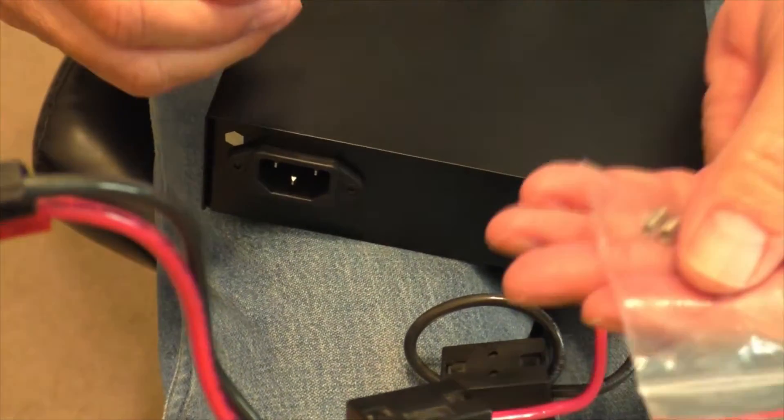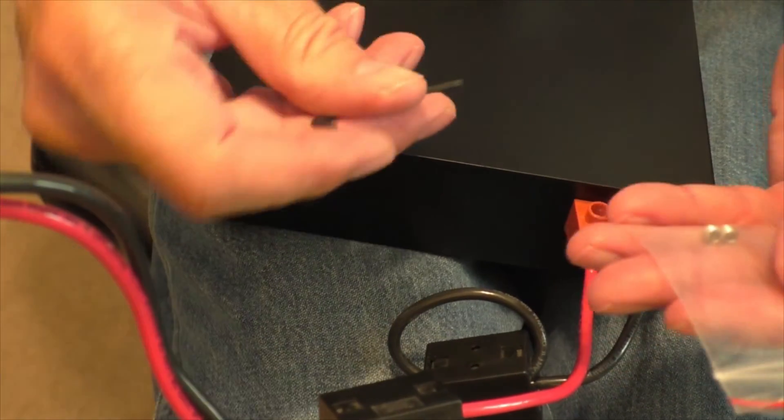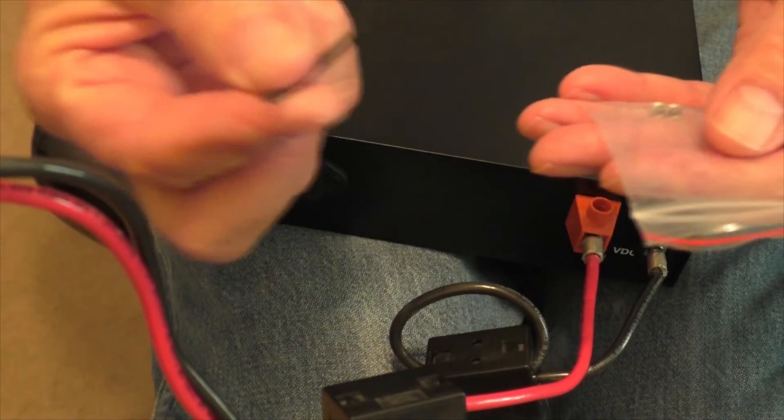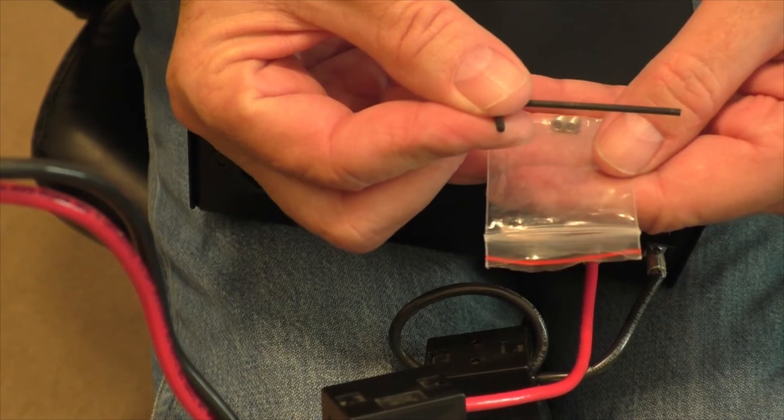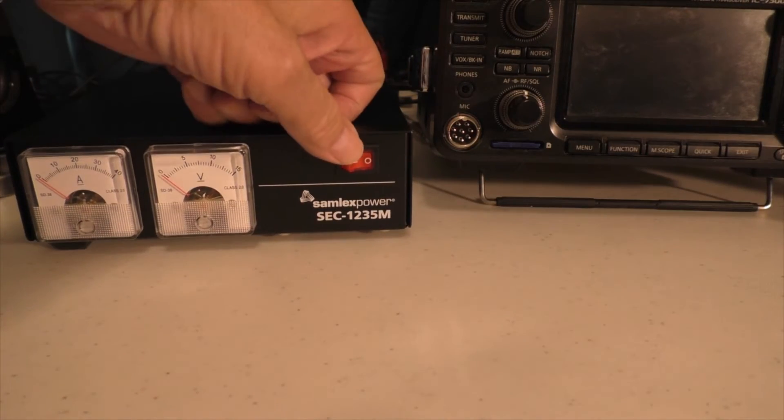They also gave you a couple of set screws just in case you lose the set screws in here and the Allen wrench as well. As you can see the light lights up when you turn it on.